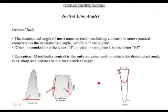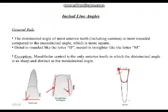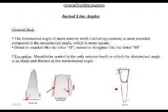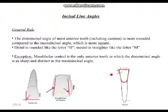There is one exception to this general rule. All anterior teeth including canines follow it, except the mandibular central incisors. For mandibular centrals, both edges are square — it's the only anterior tooth in which the distal incisal angle is as sharp and distinct as the mesial incisal angle. All other incisors and canines: mesial is sharp, distal is rounded.